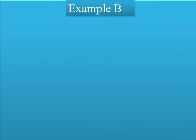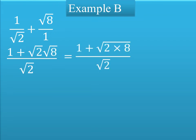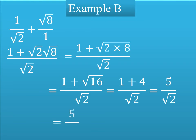Example B: we add the fractions 1/√2 + √8/1 by finding the LCM, which is √2. This gives us (1 + √2·√8)/√2 = (1 + √16)/√2 = (1 + 4)/√2 = 5/√2. We then multiply and divide by the conjugate of the denominator: 5/√2 × √2/√2, which equals 5√2/2.